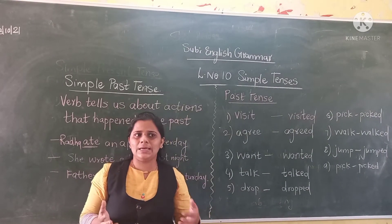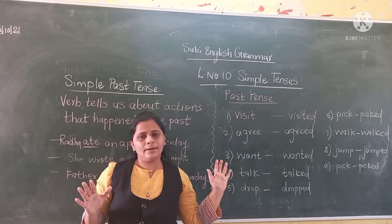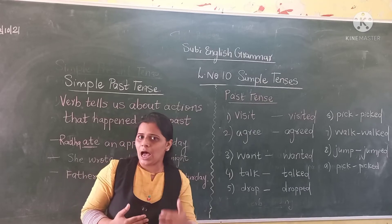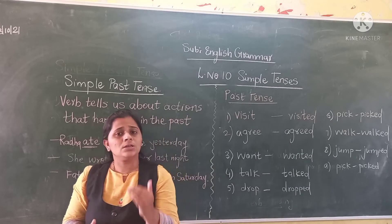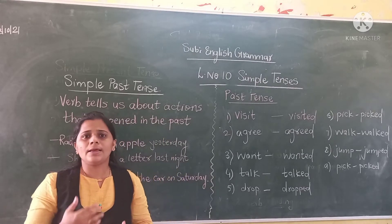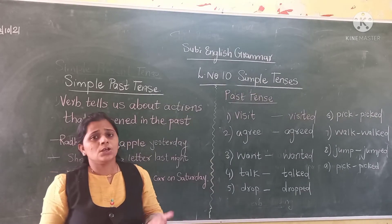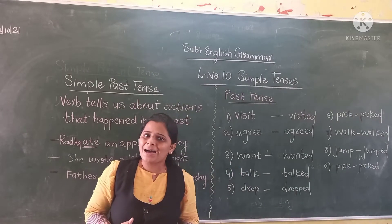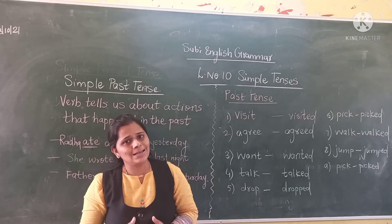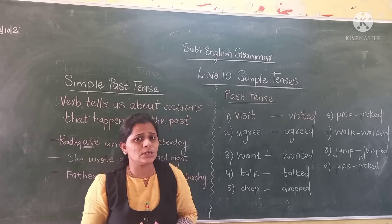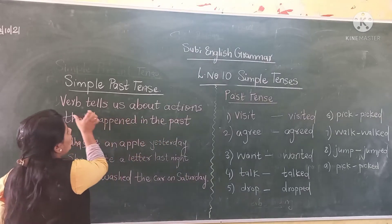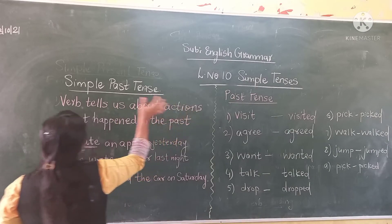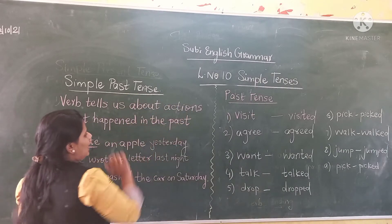Past means already taken place — which is yesterday, for example. And for present you say 'now' — action which happens now in the present time is present tense. So action which is already completed in the past is past tense. So what we have to see? We have to see the verb — the verb tells us about an action that happened in the past.